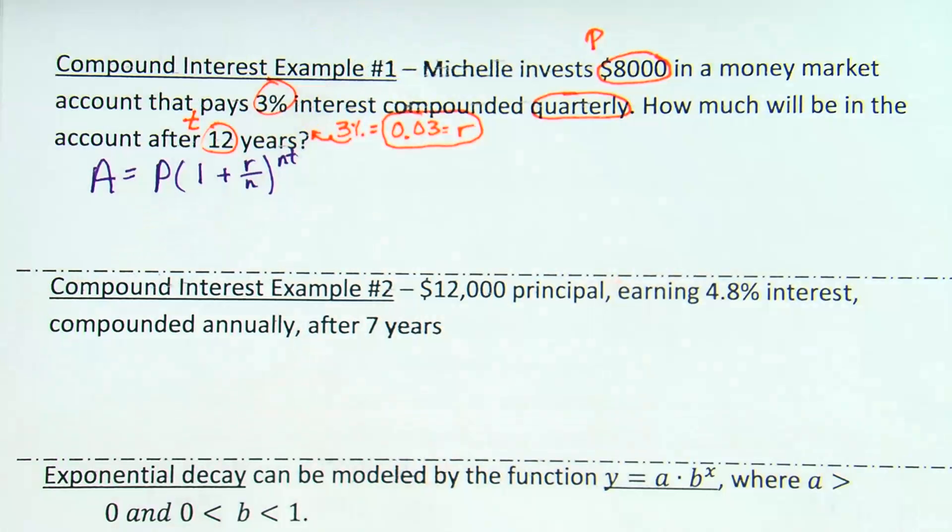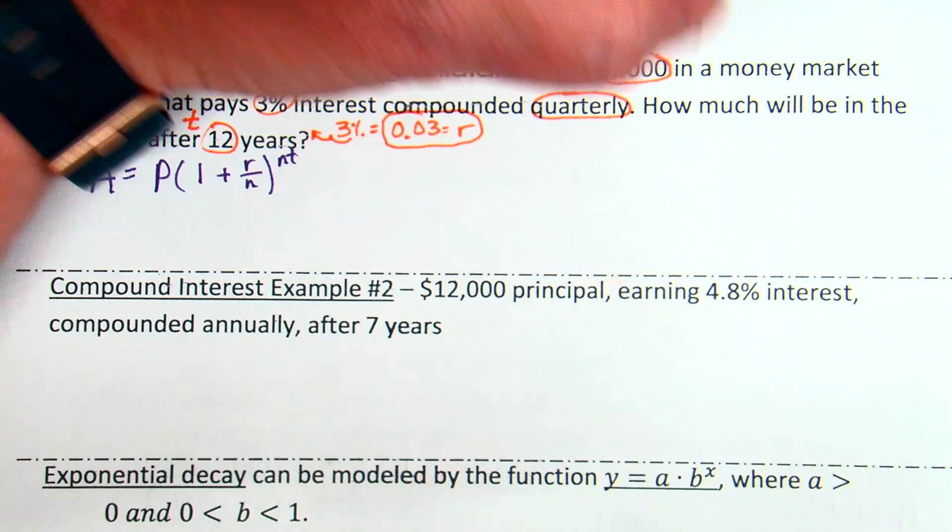It's compounded quarterly. If something happens quarterly, how often does that happen? Well, how many, if something's broken up into quarters, how many pieces is it broken up into? Right. Fourths. So, if I, you know, if we break something up into quarters, we break it up into fourths. Yeah. And so, that's how often this is compounded. So, we're going to say N is 4. Yes, I know. There's been a bug flying around all day. I think it's just making the rounds around my room.